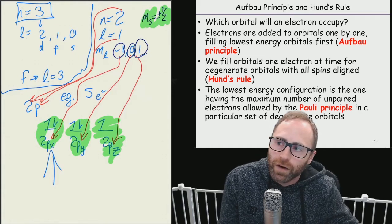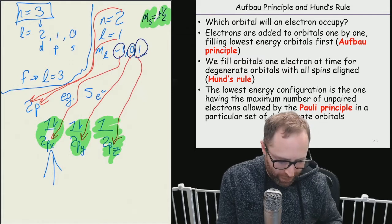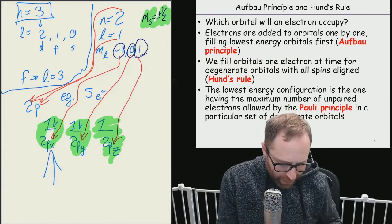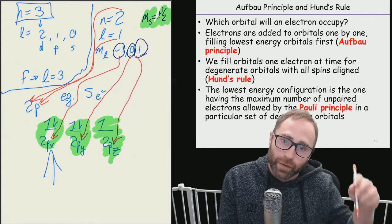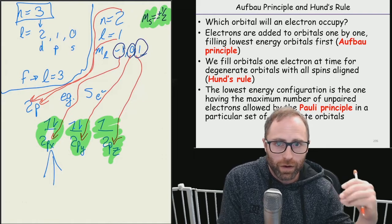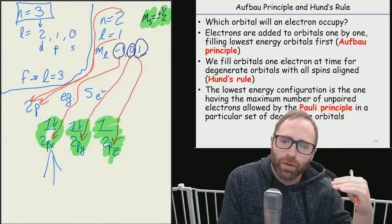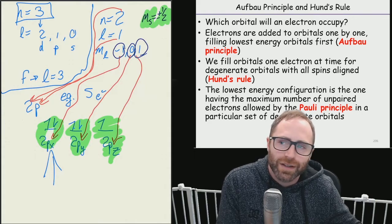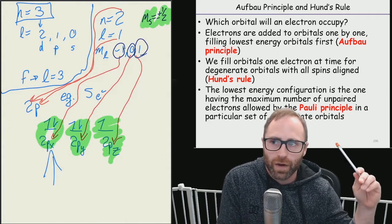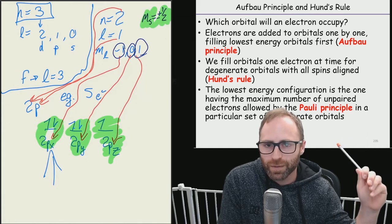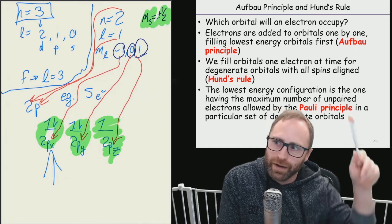And we can put our electron in there. So we have one up, one up, one up for a total of three electrons spin up, one down, one down for a total of two electrons spin down, for a total of five overall electrons. And that's really the gist of these three rules, the Aufbau principle, Pauli exclusion principle, and Hund's rule.